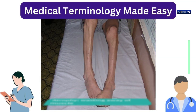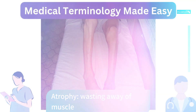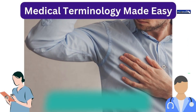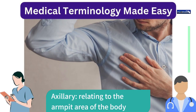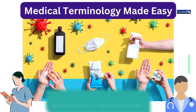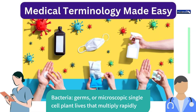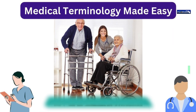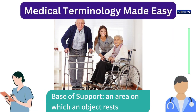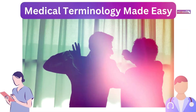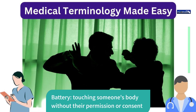Atrophy: wasting away of muscle. Axillary: relating to the armpit area of the body. Bacteria: germs, or microscopic single-cell plant-like organisms that multiply rapidly. Base of support: an area on which an object rests. Battery: touching someone's body without their permission or consent.